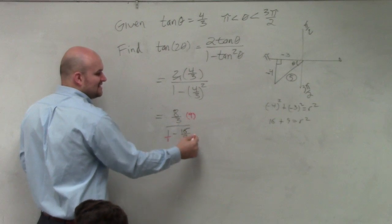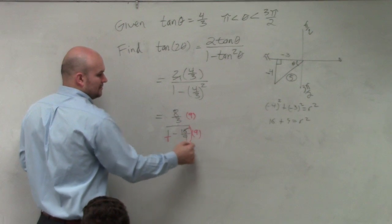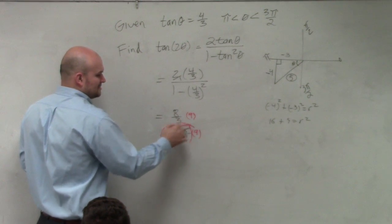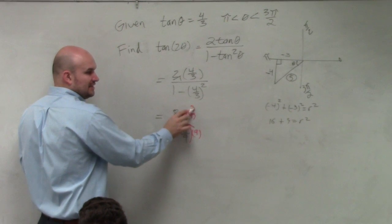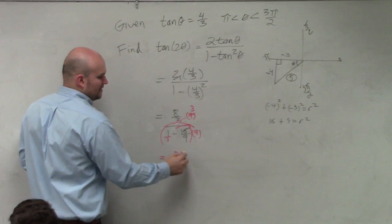So if I multiply everything times 9, watch what happens. That goes to 3. 9 divided by 3 is 3. 8 times 3 is 24.